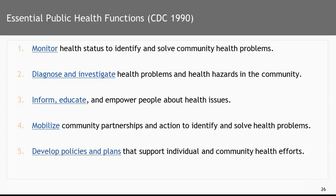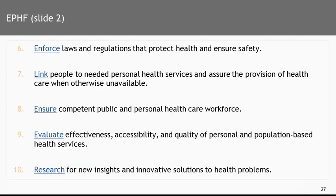Number five is the development of policies and plans that are going to support strategies to address the problems. What comes next in the last five functions is an assessment operation where the strategies are enacted. Many of the strategies will be based on laws and regulations to protect health and ensure safety, and number six is to enforce those laws. Public health departments, although they may not have law enforcement authority, have to assure that the laws are enforced by whatever unit has that authority. Essential public health function number seven is to link people with personal health services, as policies will likely require people — sick or healthy — to get individual health care services from their doctors and nurses.